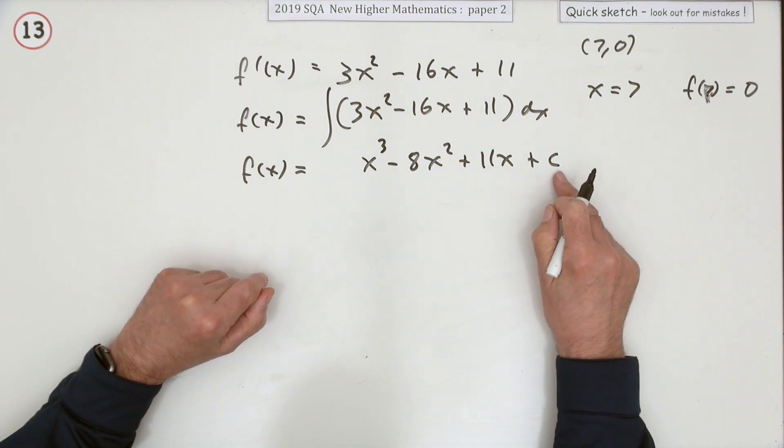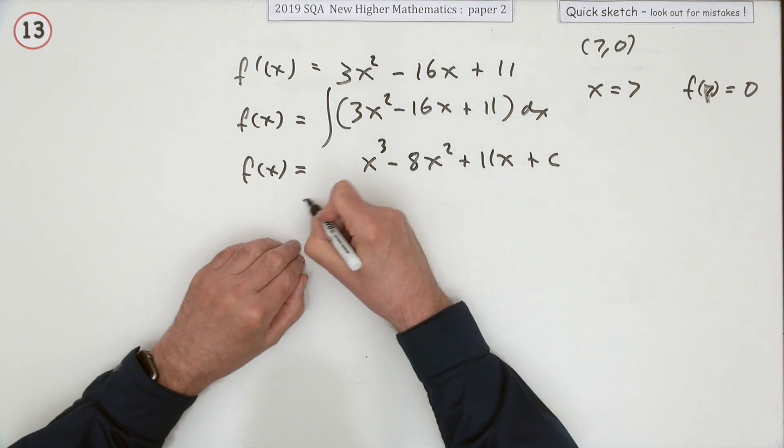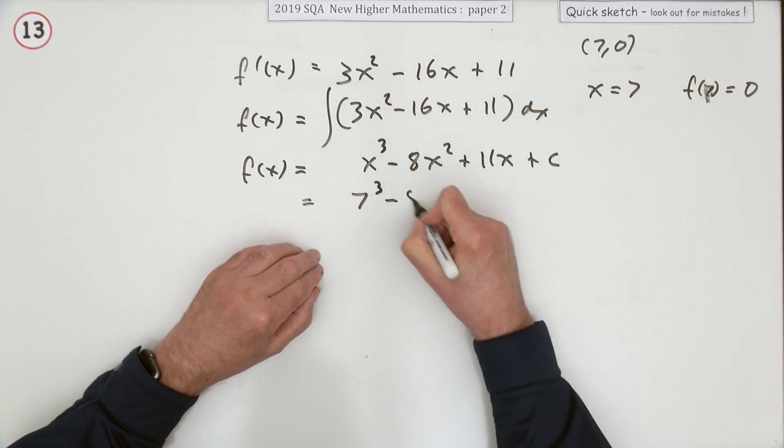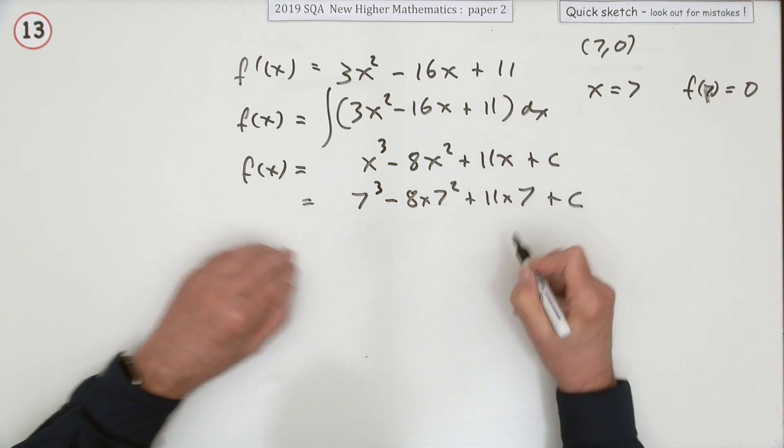Now it's just a case of finding c using those values. Make sure you put them the right way around. It's the x that's seven, so it's seven cubed minus eight times seven squared plus 11 times seven plus c.